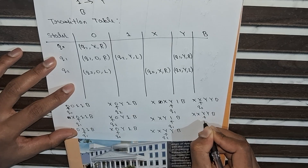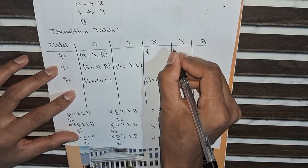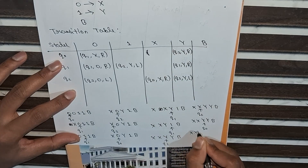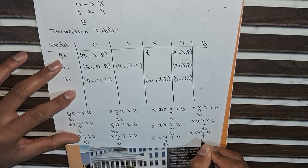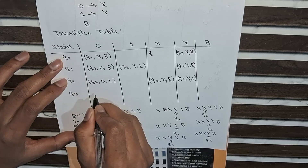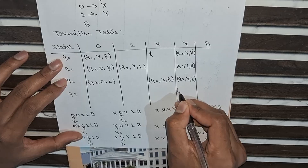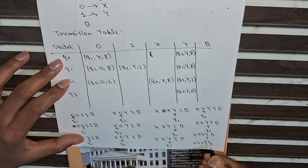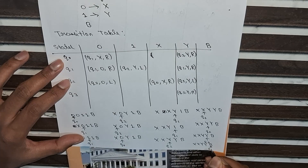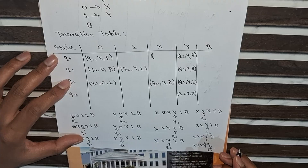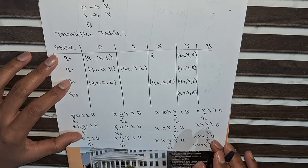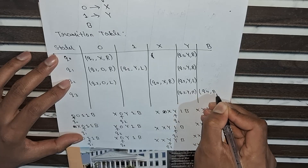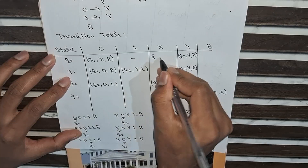Now at q0 with input symbol Y, I define a function: change state q0 to q3, keep Y, and move towards right. I introduce new state q3 and define: at q3 on Y, keep q3, keep Y, move right. The tape becomes X X Y Y B — the read-write head is on the blank symbol, meaning end of string: equal number of zeros and ones are confirmed. The final transition is q3 to q4 on blank, move right — q4 is the final accepting state.